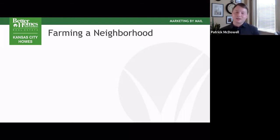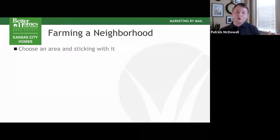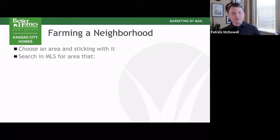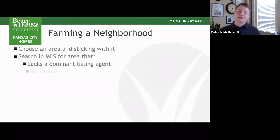Then you're going to focus on farming a neighborhood. Once you've decided you're going to do it, pick an area and stick with that area. You're going to stick with it for months and months — probably a whole year. All of 2021, you're going to stick with that neighborhood and mail something out consistently. You can search in the MLS — very easy to do. Search for an area or neighborhood that lacks a dominant listing agent. We all know there are some that have a listing agent who's always listing the houses.